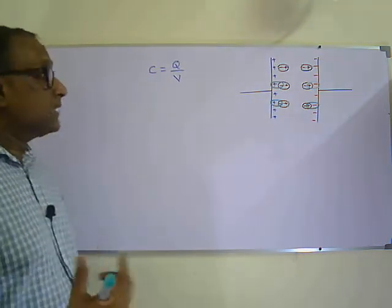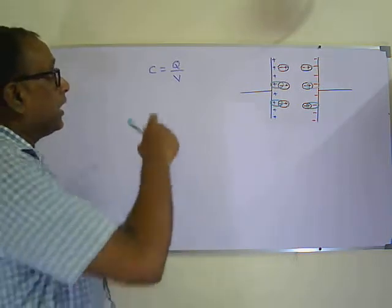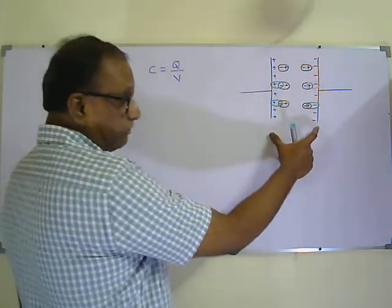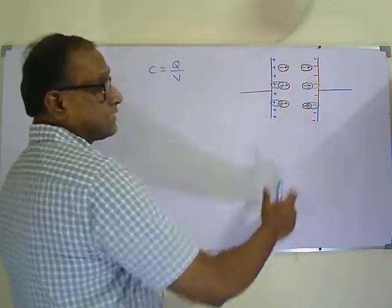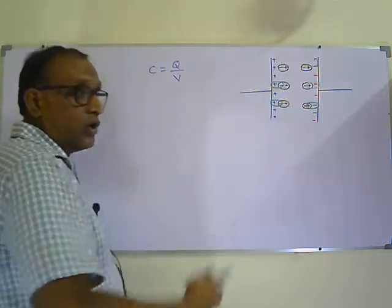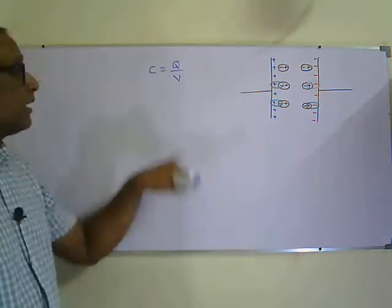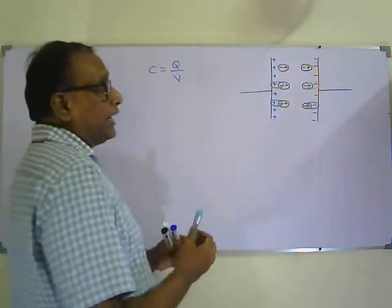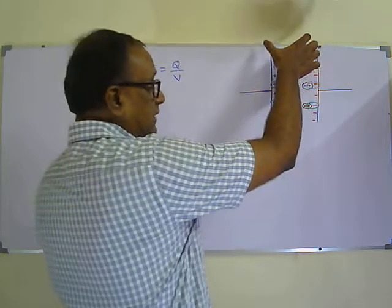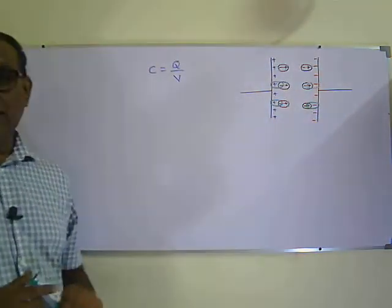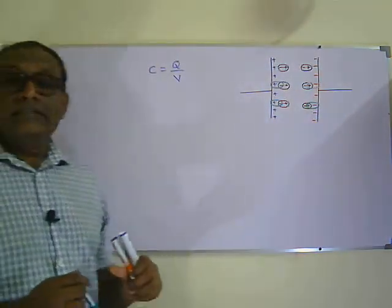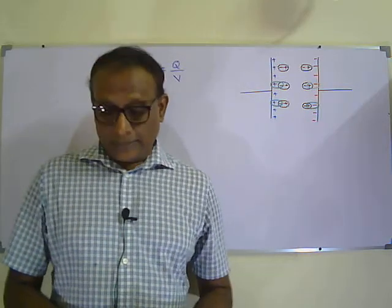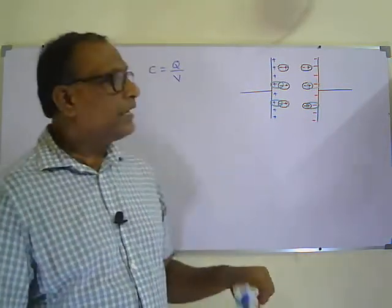When the voltage across the parallel plates decreases but the charge on the plates remains unchanged, the capacitance will increase. The charge remains the same and the effective voltage across the plates drops, so the overall effect is that the capacitance will increase when you insert a dielectric material in the region between the already charged parallel plates.